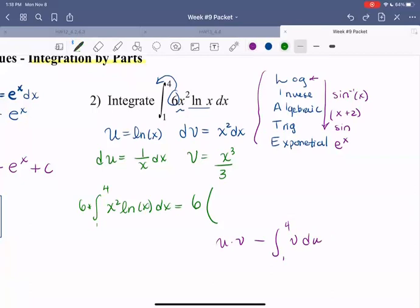u is ln of x, v is x cubed over 3, evaluated from 1 to 4. We subtract the integral from 1 to 4 of v, which is x cubed over 3, times du, which is 1 over x dx.